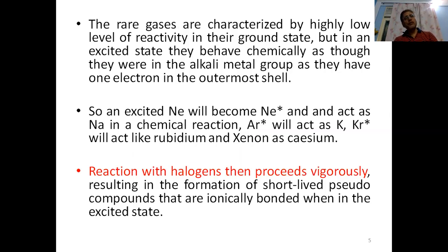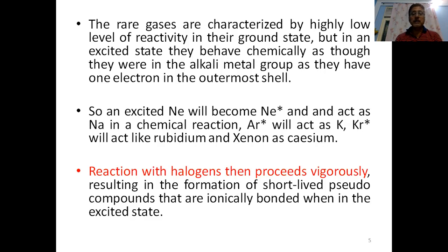Now let us move from the basic understanding of a dimer or exciplex to the case of the rare gases. These rare gases are characterized by a very low level of reactivity in their ground state, but in the excited state they behave chemically as though they were in the alkali metal group, having one electron in the outermost shell. Excited neon acts as Na*, excited argon acts as potassium, krypton acts as rubidium, and xenon in the excited state behaves like cesium.